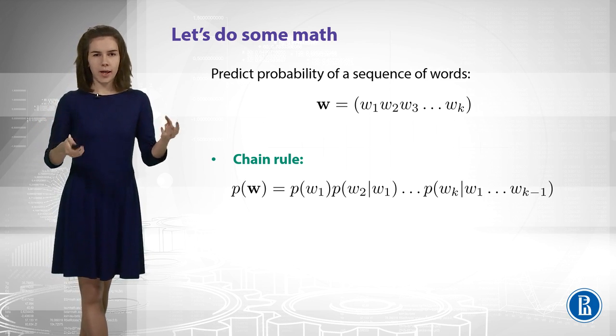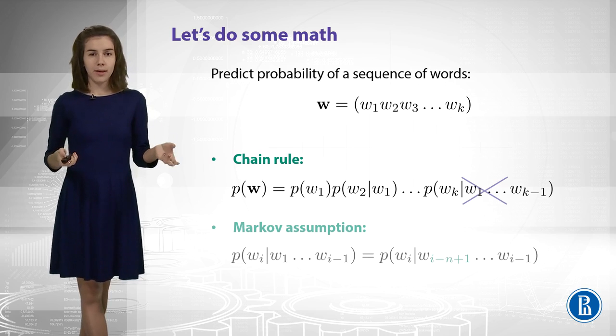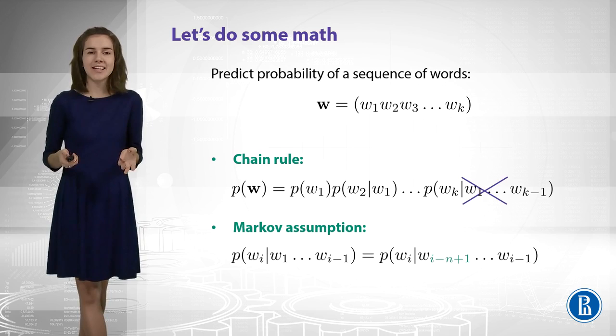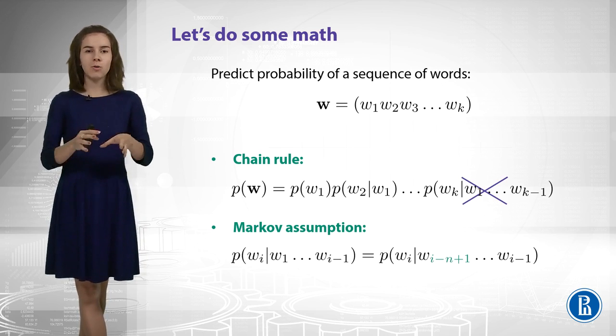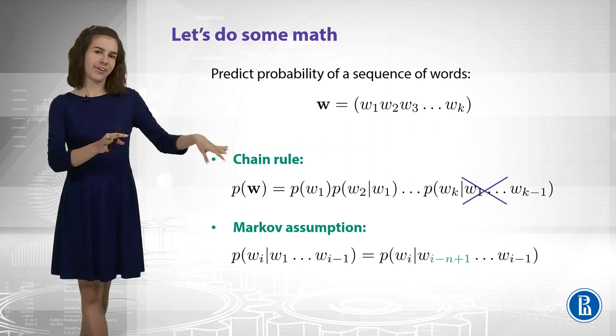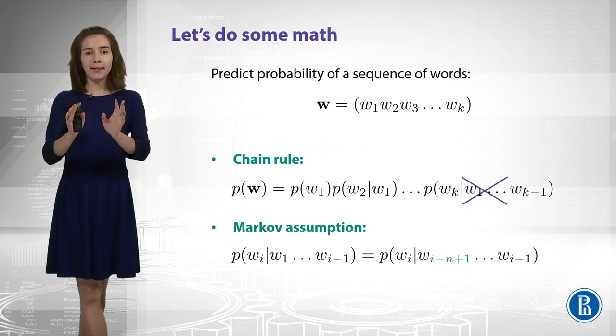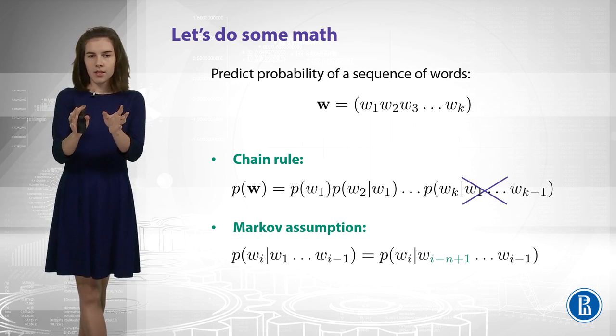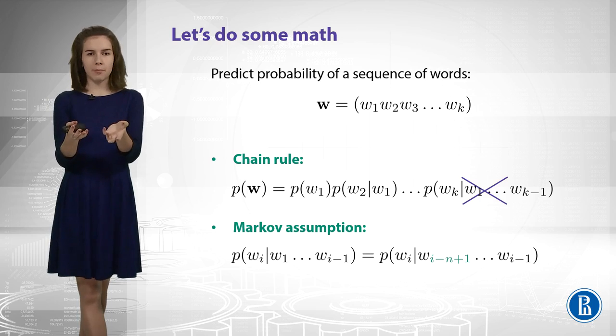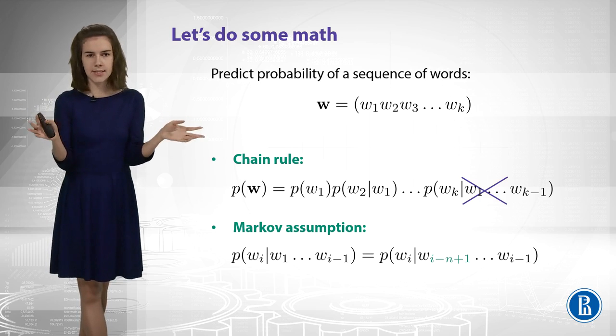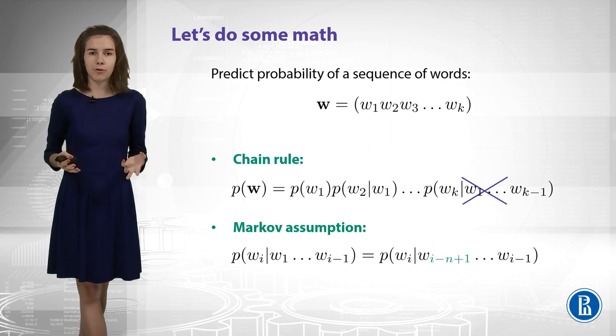So, can we get rid of it? Yes, we can. So, actually, Markov assumption says you shouldn't care about all the history. You should just forget it. You should just take the last n terms and condition on them. Or to be correct, last n-1 terms. So, this is rather intuitive assumption, because not everything in the text is connected. And it is definitely very helpful for us, because now we have some chance to estimate these probabilities.